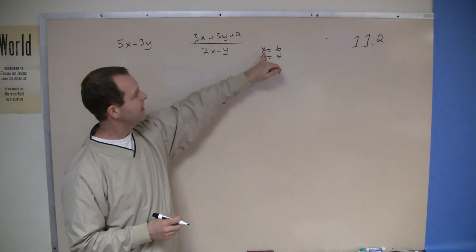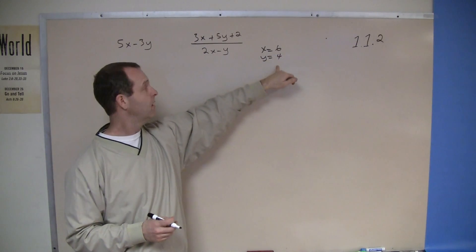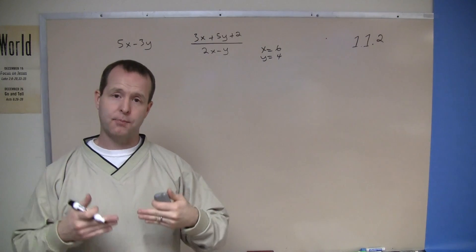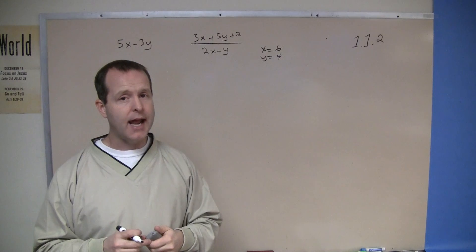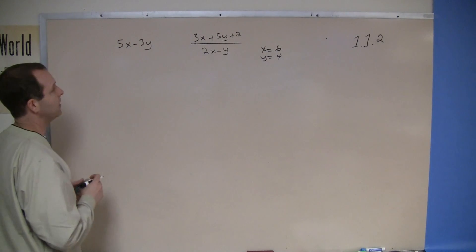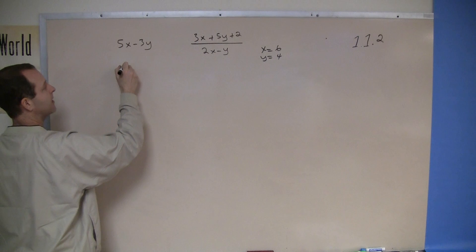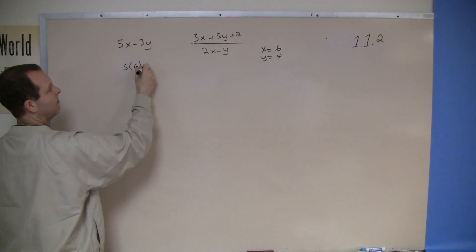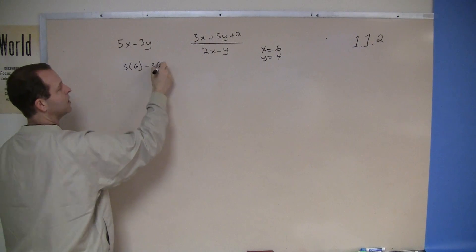They want me to evaluate the expression where x equals 6 and y equals 4. So what I'll do is I'll rewrite the expression down, and everywhere I see an x, I'll just simply replace an x with the value they asked me to do. So it's going to be 5 times an x, which is, in this case, a 6, minus 3 times a y, which is a 4.